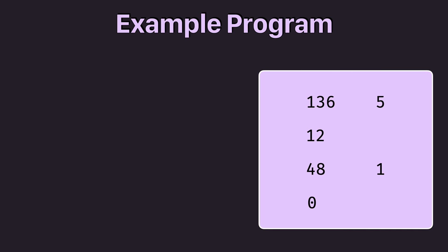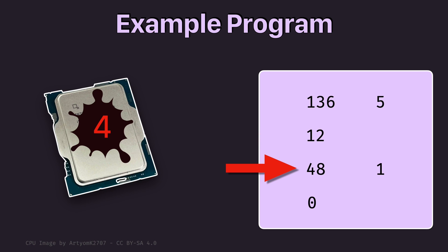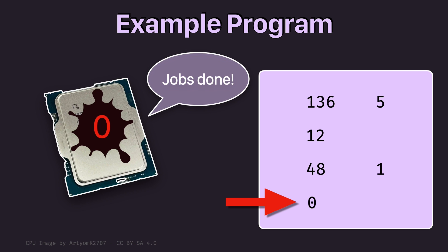If we were to run this program, the CPU would fetch the first instruction and load the number 5. It would then decrement it by 1, resulting in 4. It checks if the number has reached 0, which it hasn't, so it jumps back by 1 instruction, executing the decrement again, resulting in 3. This process repeats until the number eventually reaches 0, at which point the CPU no longer jumps back — instead it executes the stop instruction. As you can see, even a simple program like this looks very cryptic — just a bunch of numbers with a certain meaning that a programmer would have to remember.